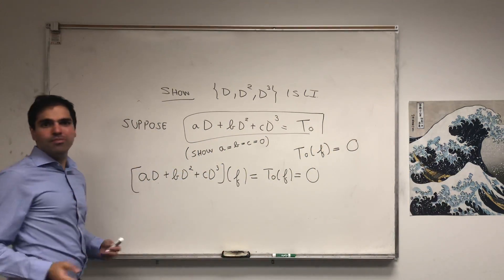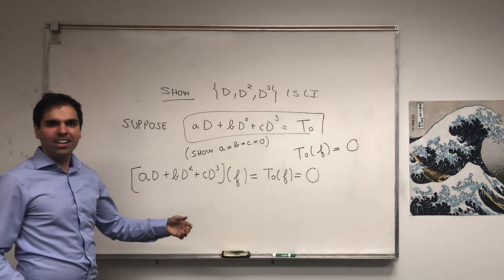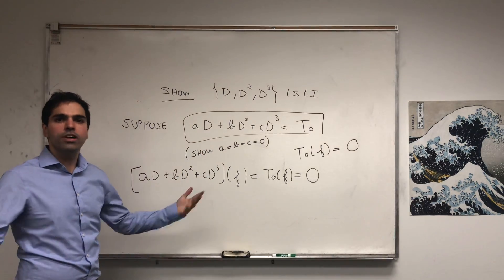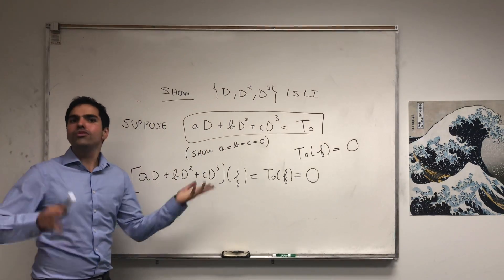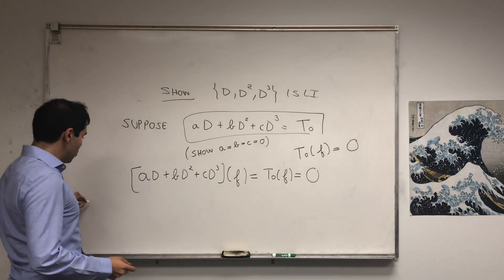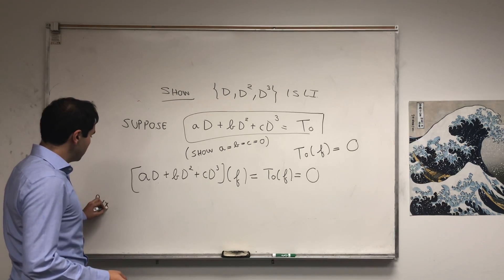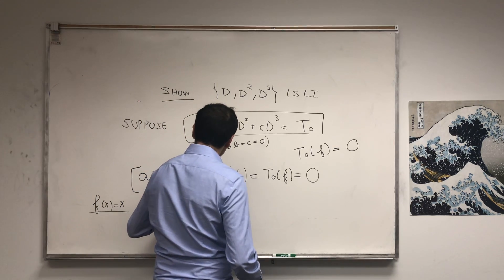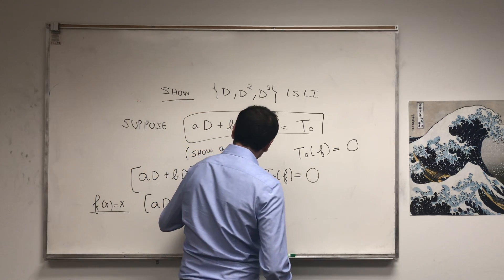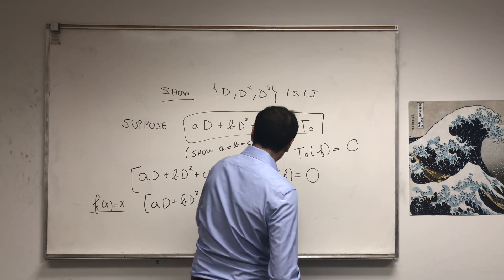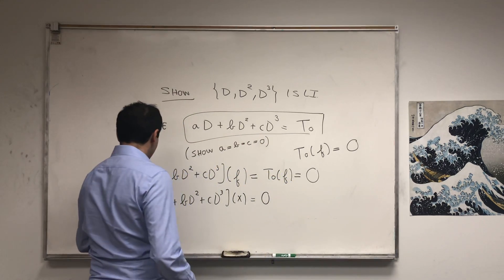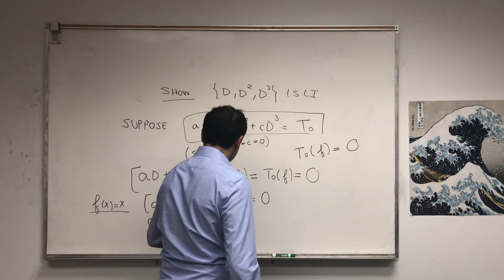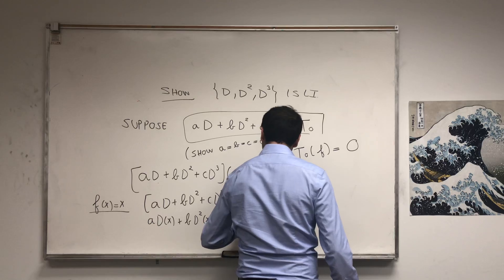So just start with some easy functions. Well, if you have f is one, it doesn't really give you much info. It would tell you zero plus zero plus zero equals zero, but that's true no matter what a, b, and c are. Well, no problem, let's just continue. Let's take the function x. Then what we get: aD + bD² + cD³ of x equals the zero function. But that's aDx + bD²x + cD³x equals zero.